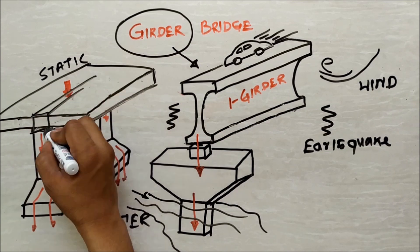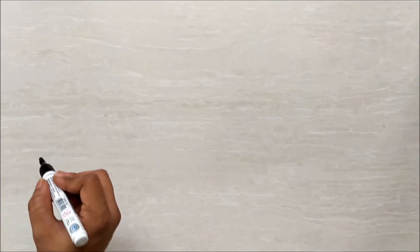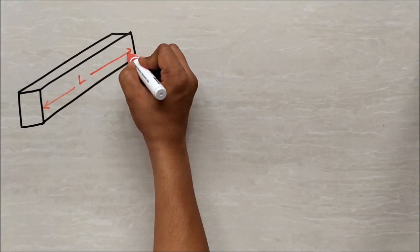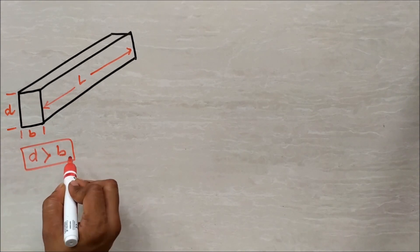Now the point is, we have to understand why beams are rectangular in shape and girders are I or box shaped. Let's take a look. Suppose this is a beam with rectangular cross section having a length L, width B and depth D. Have you ever noticed why the depth of beam is always more than the width?